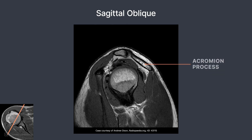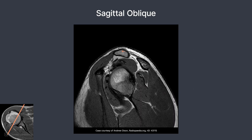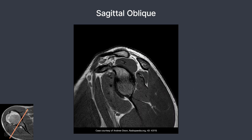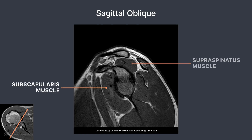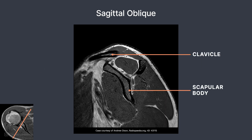Here, you can see where the acromion and clavicle meet — the acromioclavicular joint. We can begin to see a portion of all the muscles of the rotator cuff here. This includes the subscapularis, supraspinatus, infraspinatus, and teres minor. The coracoid process is also demonstrated. The clavicle, scapular body, and scapular spine are better demonstrated on this slice.